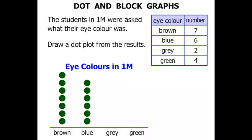For grey there were two students who had grey eyes: 1, 2. And for green eyes there were four: 1, 2, 3, 4.